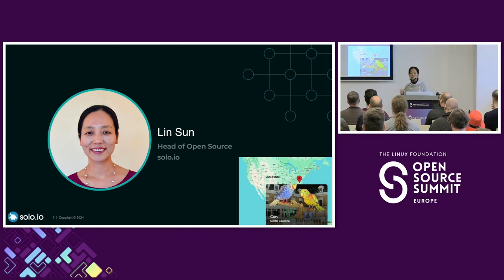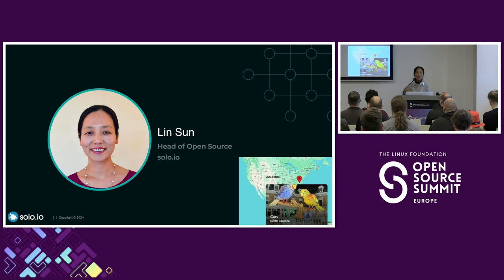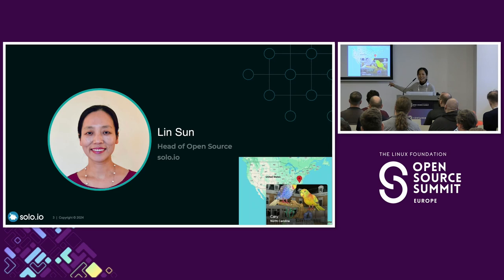My name is Lin Sang. I'm head of open source at a small company called Solo.io. I joined Solo.io about three years ago. Prior to that, I worked at IBM for 19 years as a senior technical staff member, but I decided to join a startup. When I joined Solo, I was the 30th employee. Right now our company has maybe 150 people, but I'm excited to be part of the startup journey. The house was located in Cary, North Carolina, on the east coast of the United States — somewhere between New York City, Washington DC, and Florida.